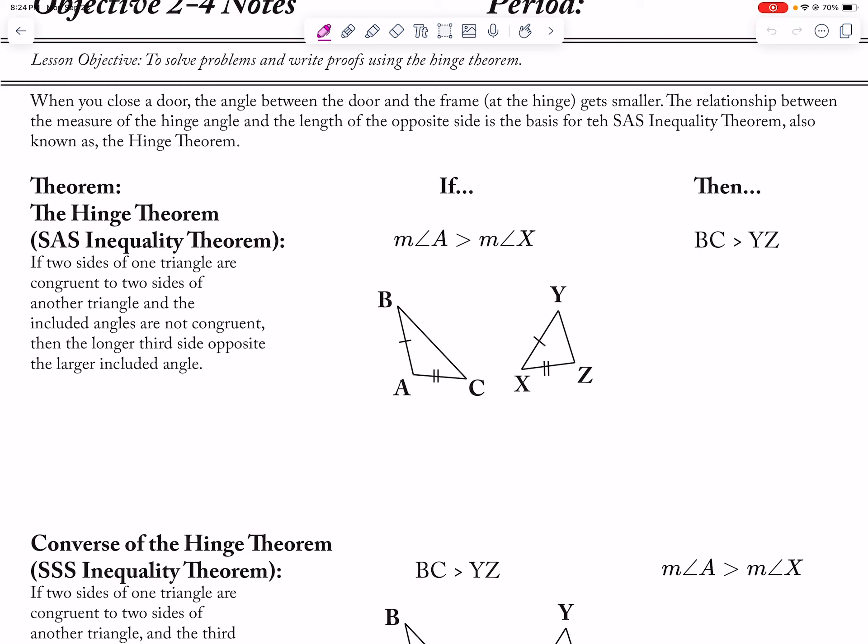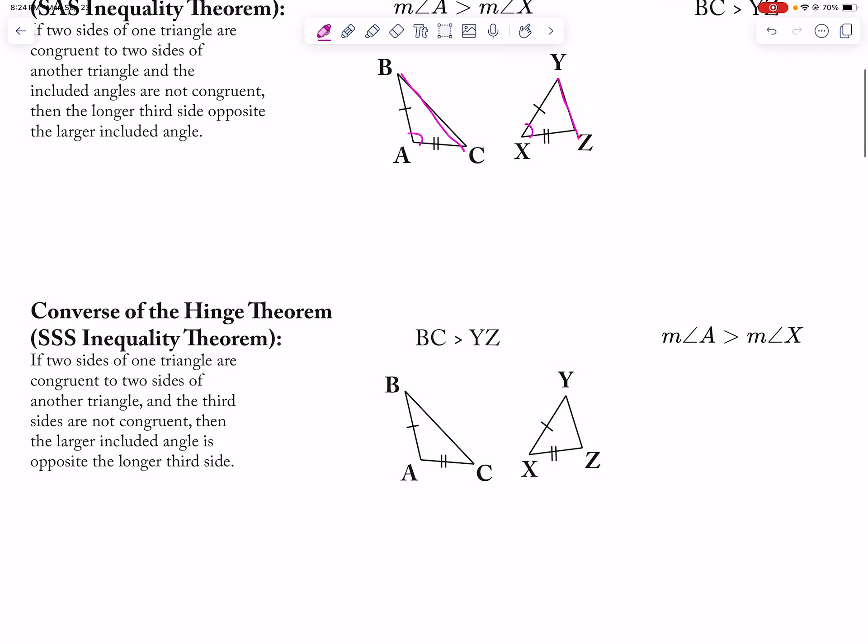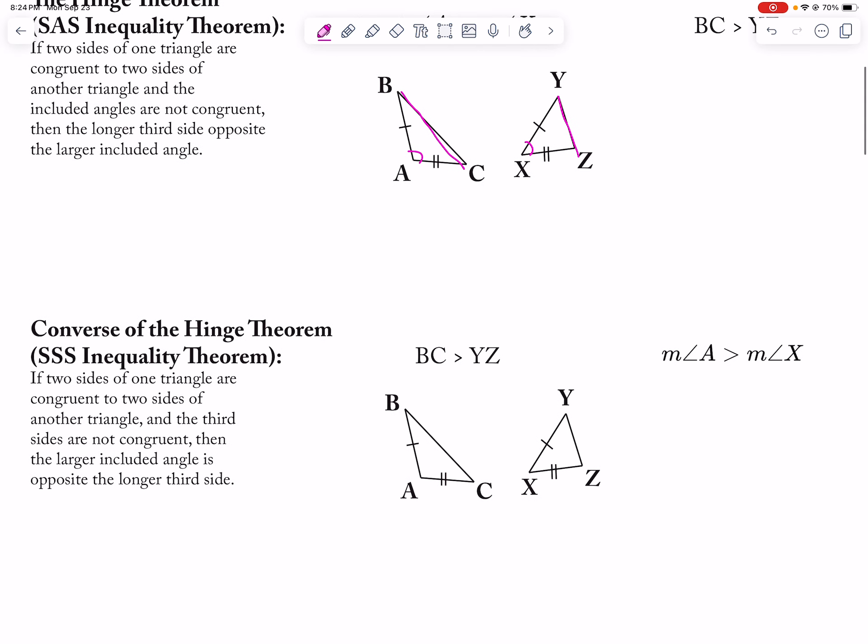This lesson talks about the Hinge Theorem, which basically says that if angle A is bigger than angle X, then this length here, BC, has to be bigger than the side that's opposite angle X, which is YZ. Makes sense because of all the other theorems we've looked at before. And then vice versa, the converse to it. So BC is bigger than YZ, then angle A is bigger than angle X.